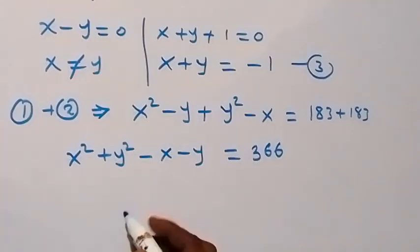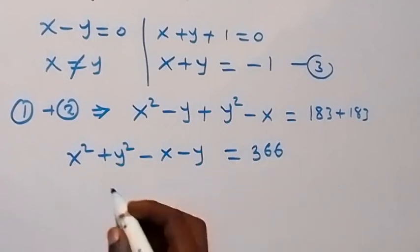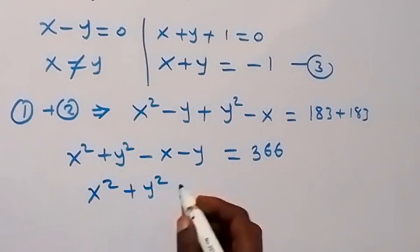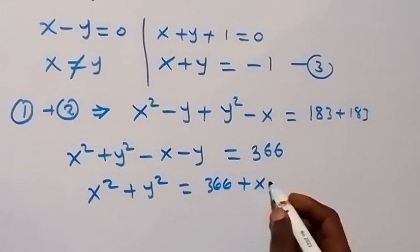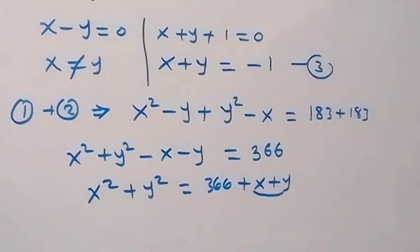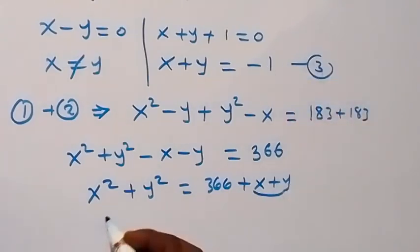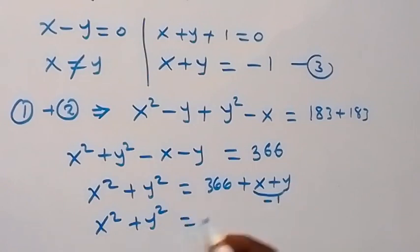When we sum the right side together, we have 366. We can take minus x and minus y to the other side, so we now have x squared plus y squared equals to 366 plus x plus y. And x plus y from equation 3 is minus 1, so x squared plus y squared equals to 366 minus 1, that's 365.